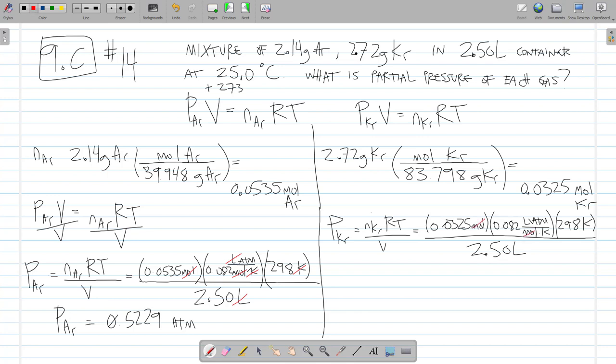Mole and mole cancel. Kelvin and Kelvin cancel. Liter and liter cancel. And the pressure of krypton equals 0.0325 times 0.082 times 298 divided by 2.5, which equals 0.3177 atmospheres.